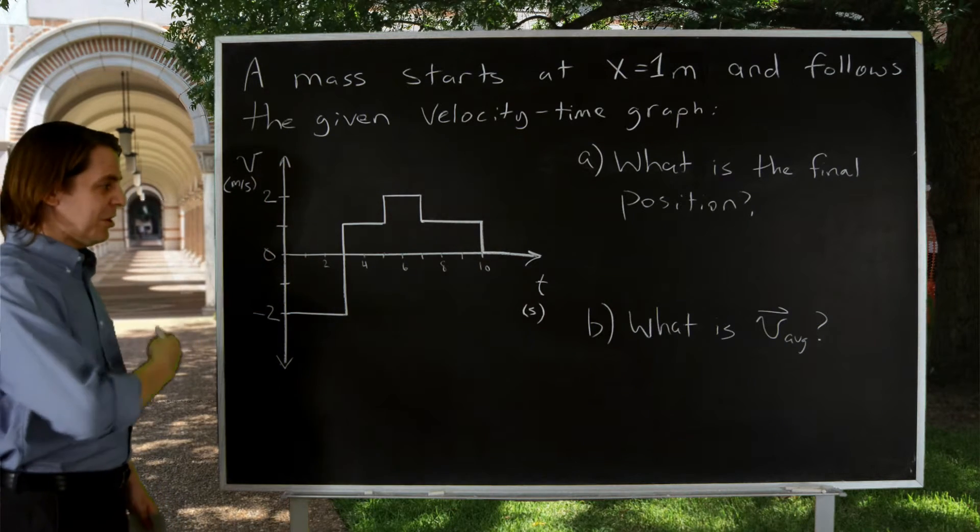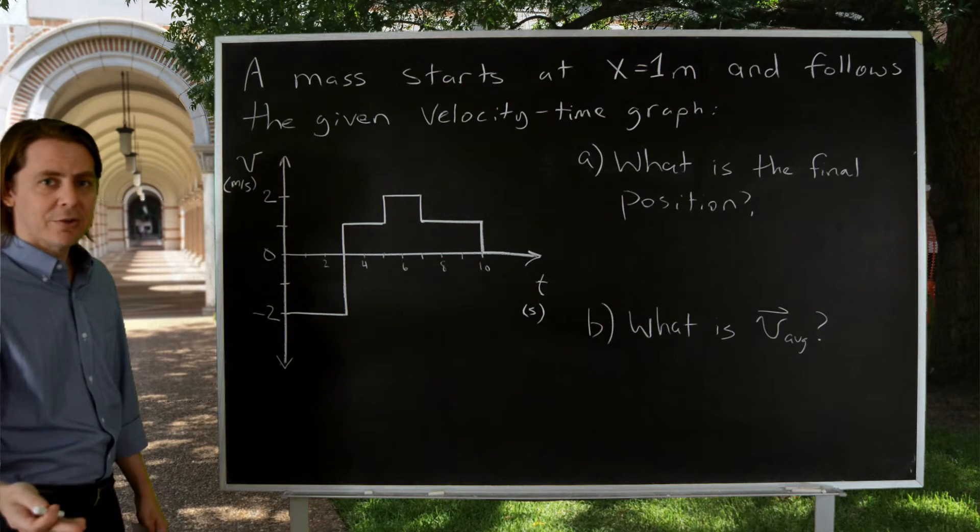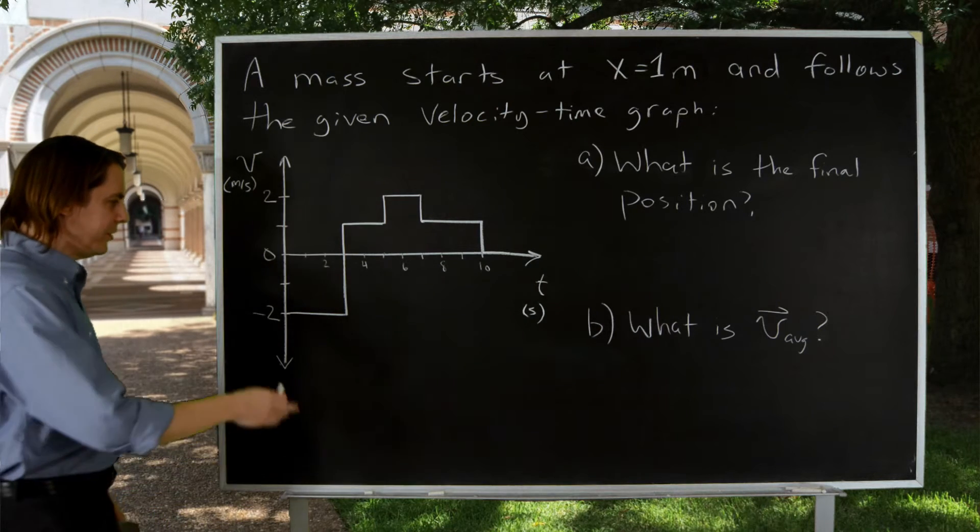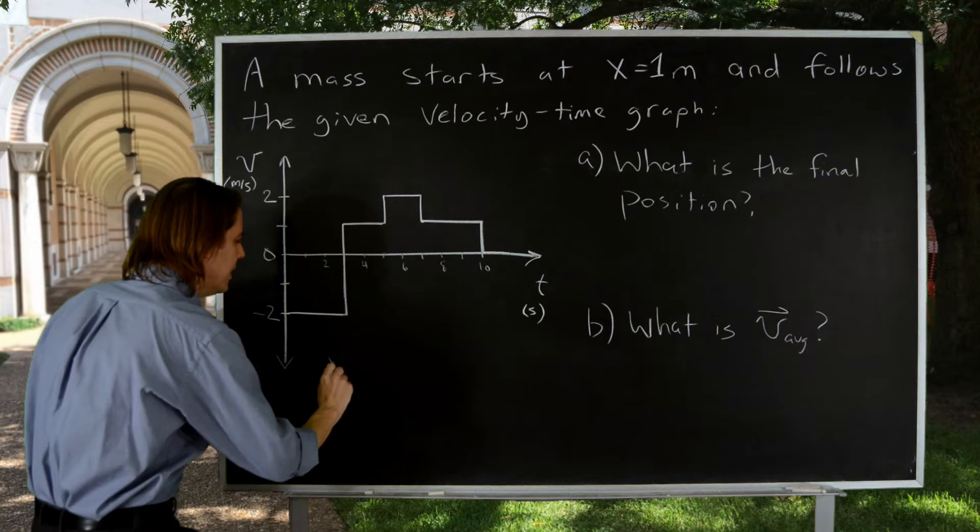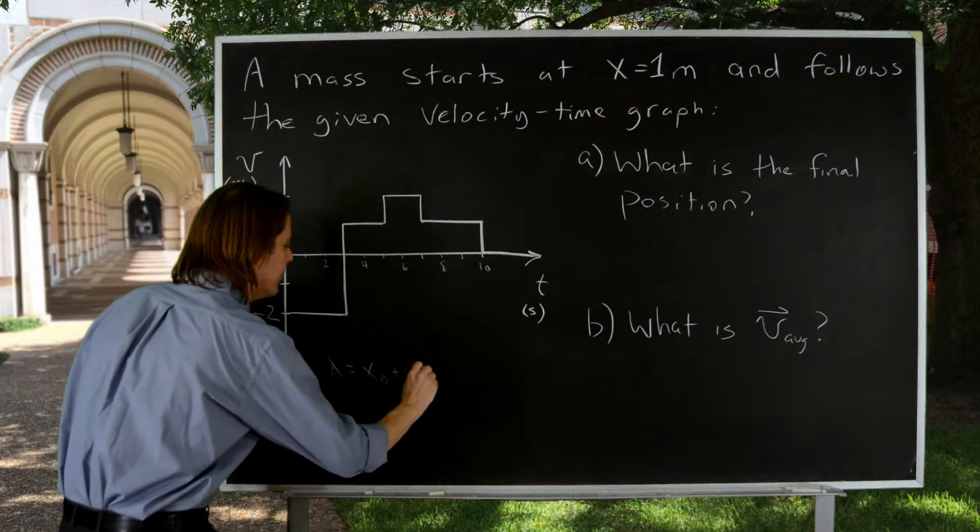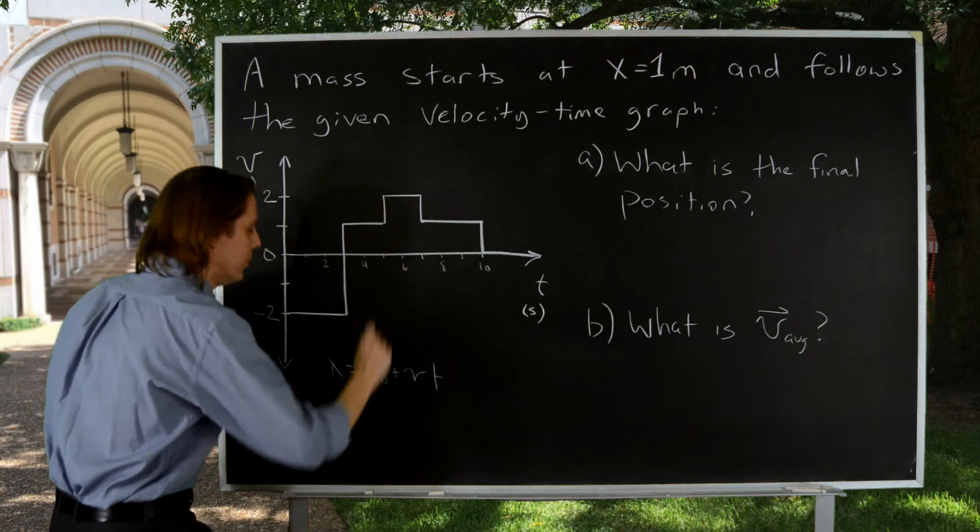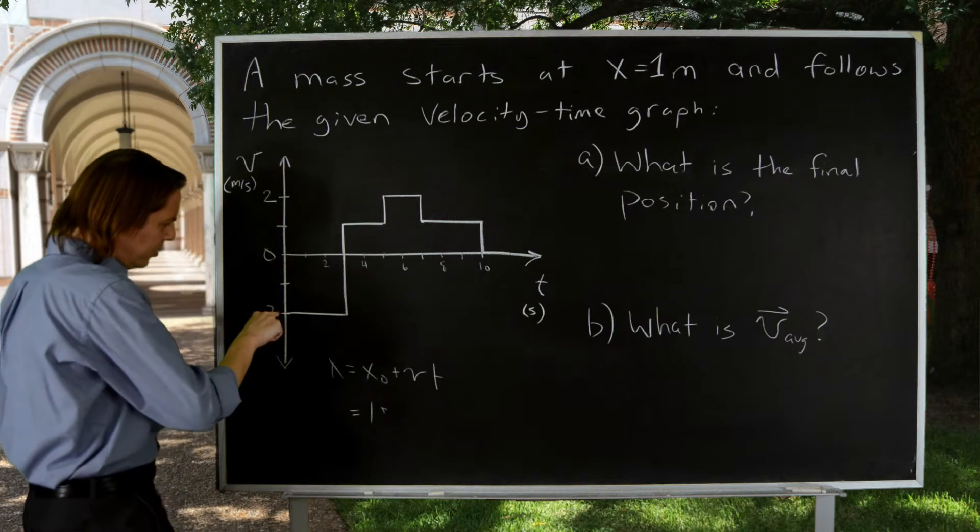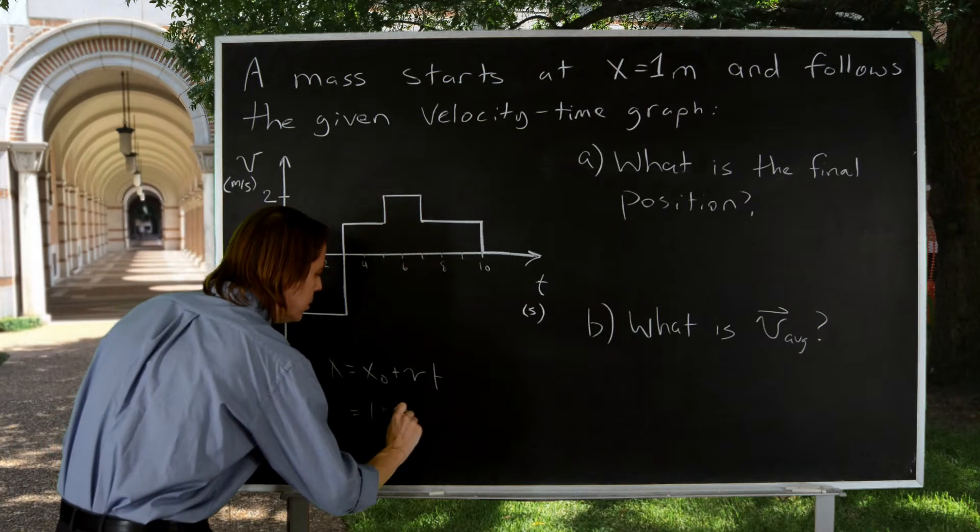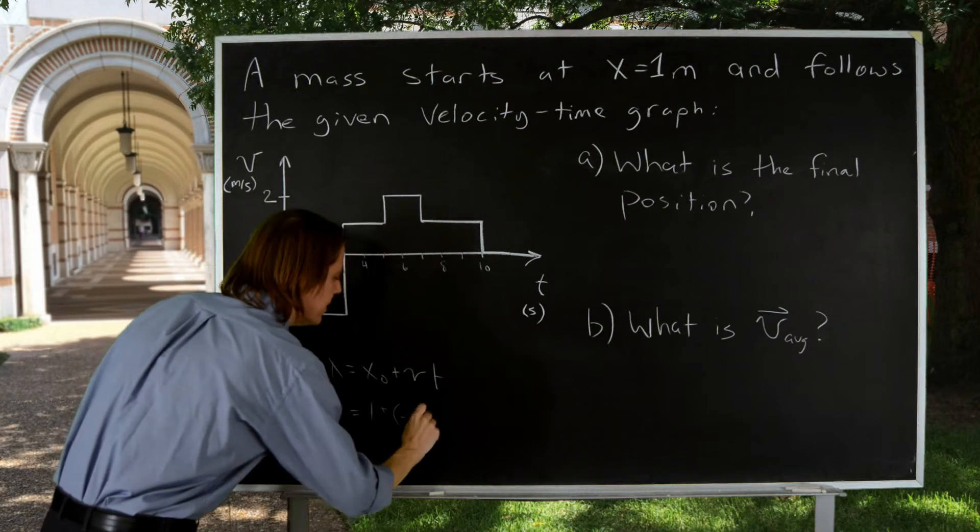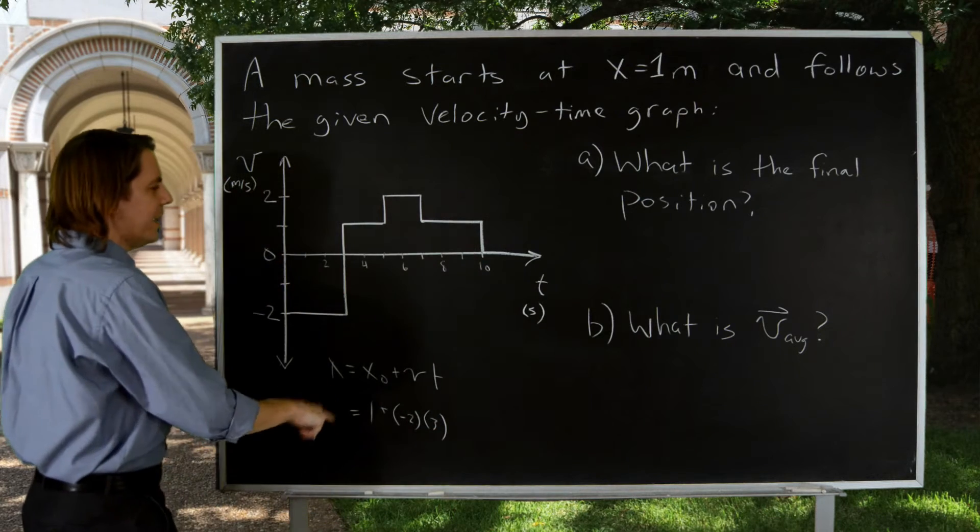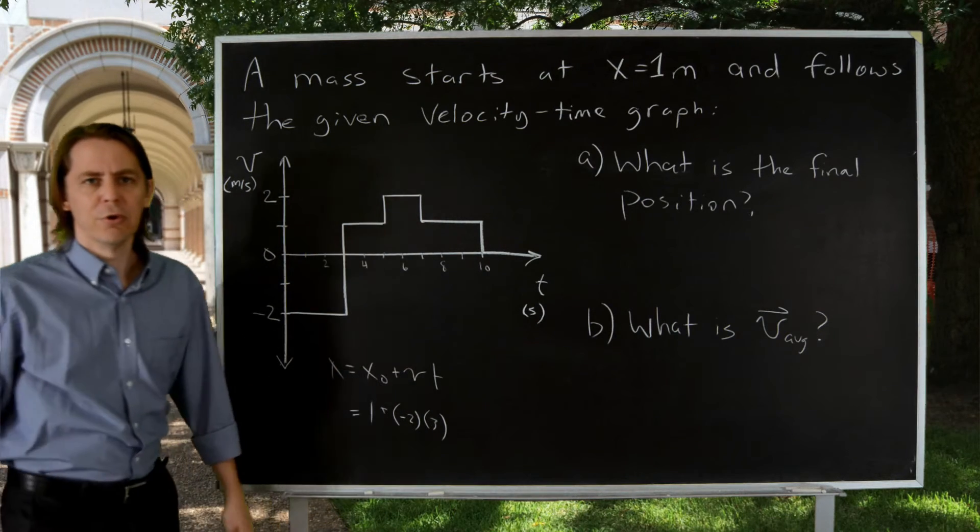So what you could do is simply apply your memorized kinematics formulas over and over again. You can say, well, it started at, let's see, x equals x0 plus vt, right. So I know it started at one meter and then it went minus two for three seconds, and you can get that x and make that x0 and do it over and over and over again.